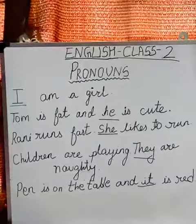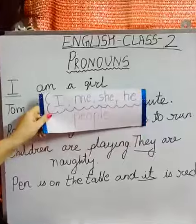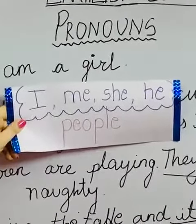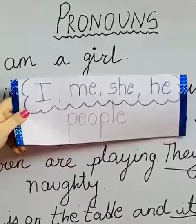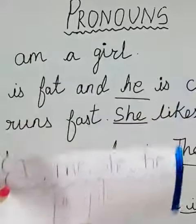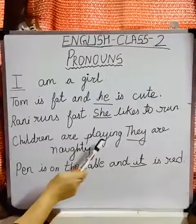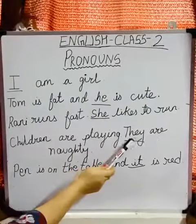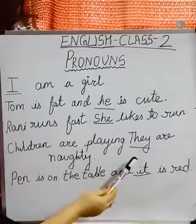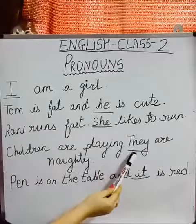In all these sentences, have you noticed, children? These are I, me, she, he. We use these pronouns for people. Next sentence is: children are plain. They are naughty. Instead of using 'children' again we are using 'they', because there are more in numbers.